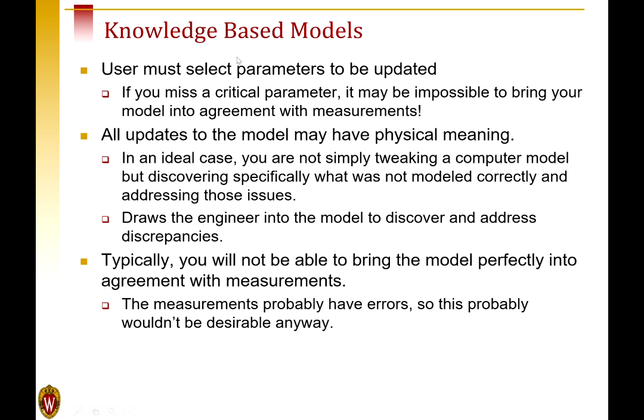Most model updating that we do is knowledge-based. We have to figure out what parameters in our model might be wrong and figure out how to parameterize the things that we're not sure about. If we guess incorrectly or if we don't pick a parameter or if there's something else wrong with our model that just can't be fixed by changing a number, then we'll probably fail. And often this is what happens. We go in circles and try to figure out where the parameters are that we haven't included that still need to be updated. The good thing is that any changes we make will have meaning. They'll often uncover problems we made during modeling. In an ideal case, we come to know the model more and more, we get more and more confidence that what we've done is correct.